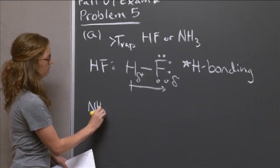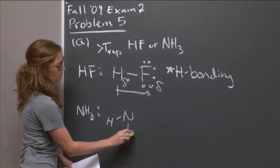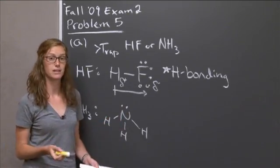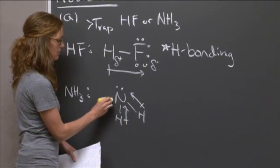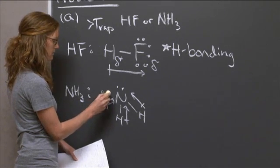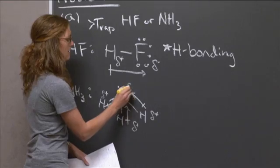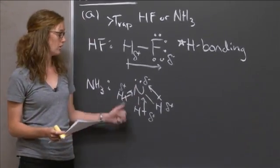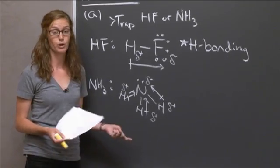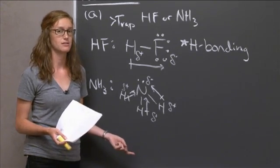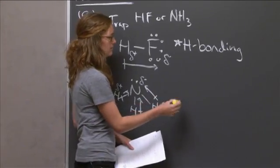Now for ammonia, we have nitrogen bonded to three hydrogens. Again, we have a difference in electronegativity, so each of these bonds is polar. Because of the asymmetric geometry, we will have a net dipole. The hydrogens have a partially positive charge because they are less electronegative, and the nitrogen has a partial negative charge. So which is our strongest intermolecular bond here? We have a net dipole, giving us dipole-dipole interactions, but because hydrogen is bonded to one of the special three atoms, we have hydrogen bonding — and that is the strongest.